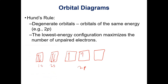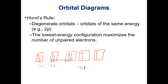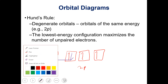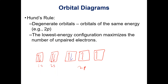So we put one electron in each of the first two 2p orbitals, giving a total of six electrons for carbon. For nitrogen with seven electrons, we add the next unpaired electron into the last 2p orbital. For oxygen with eight electrons, we now have to start pairing them up, putting the eighth electron into one of the already-occupied 2p orbitals.